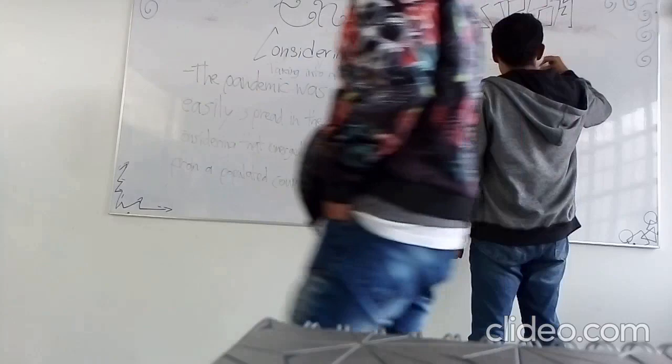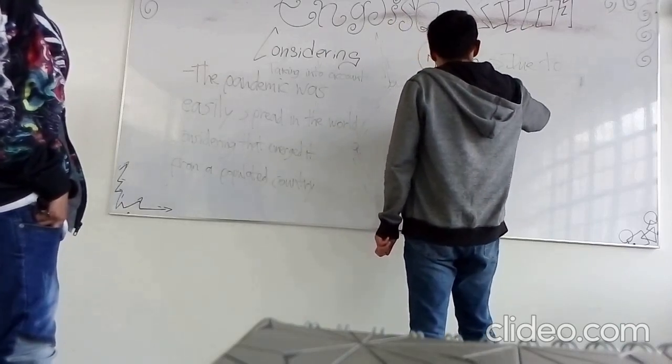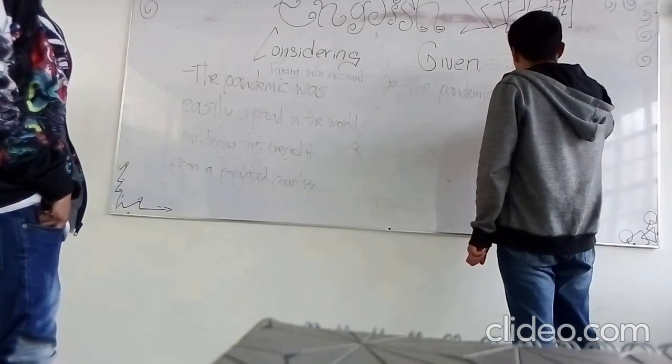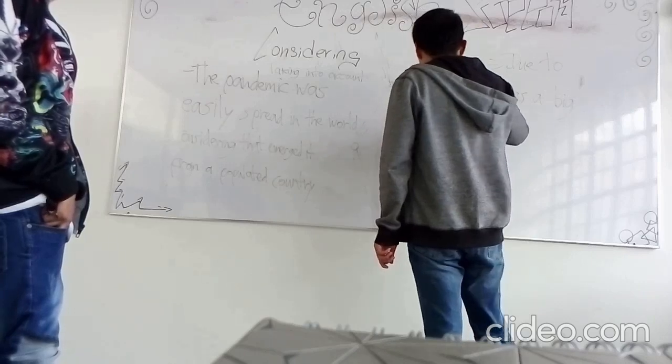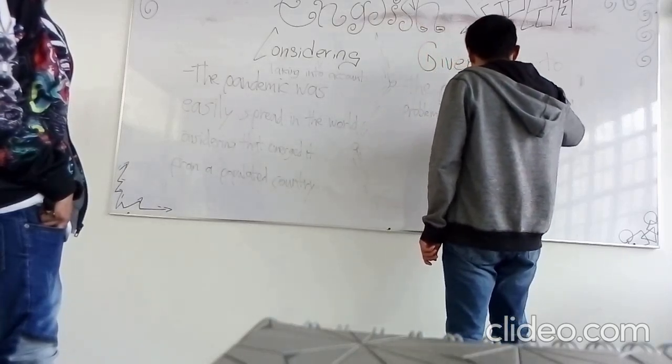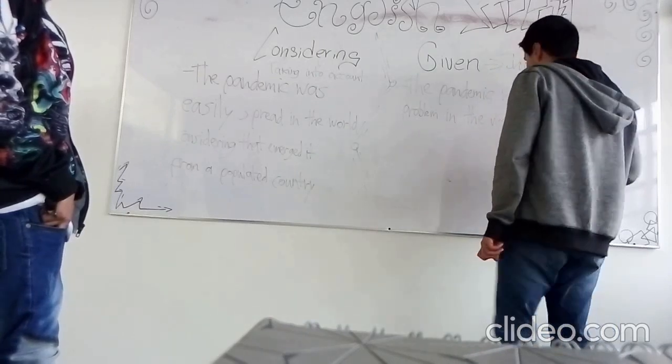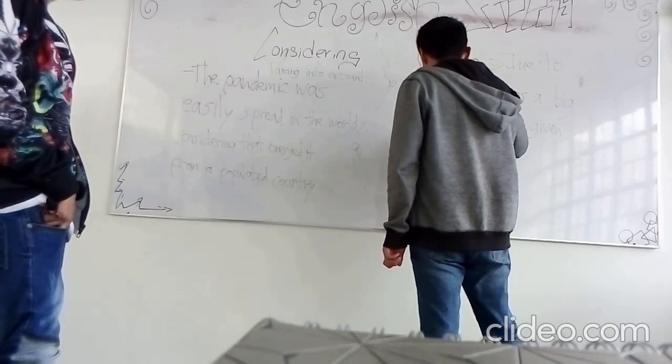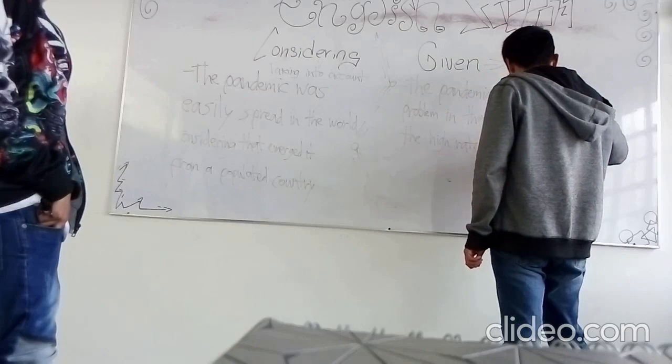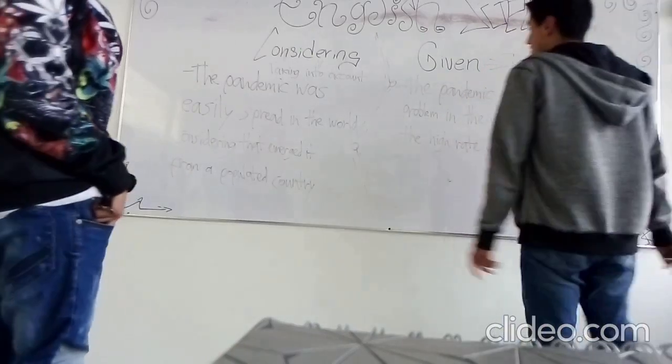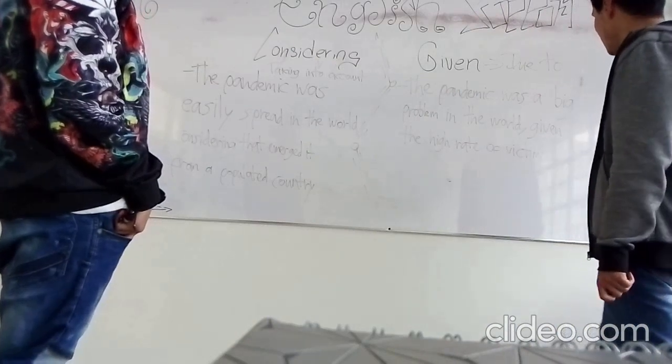Example could be. Here we go. For example, here we with the pandemic too. The pandemic was a big problem in the world, comma, given the high rate of victims. In this case, it reinforces the reason of why the pandemic was a big problem in the world.